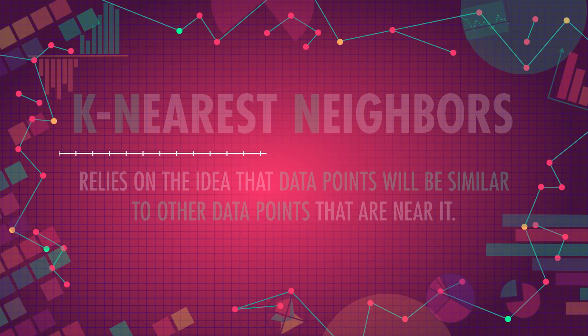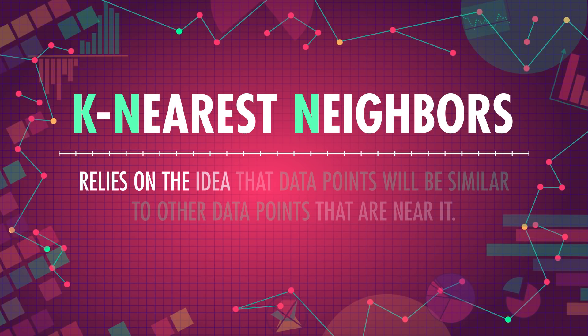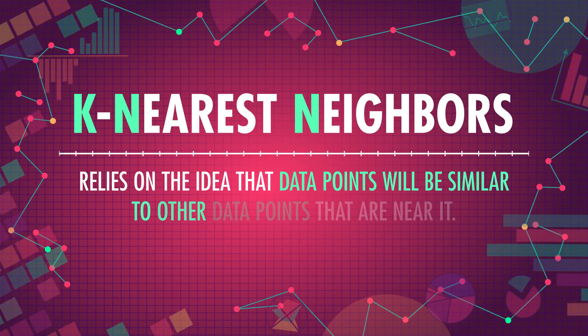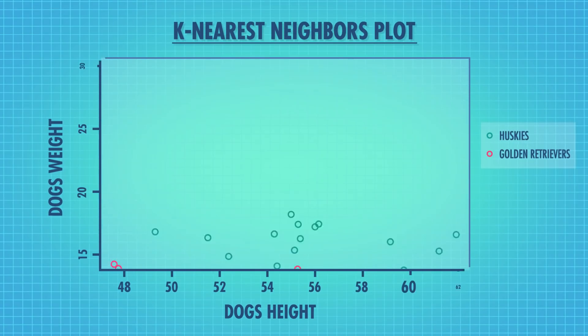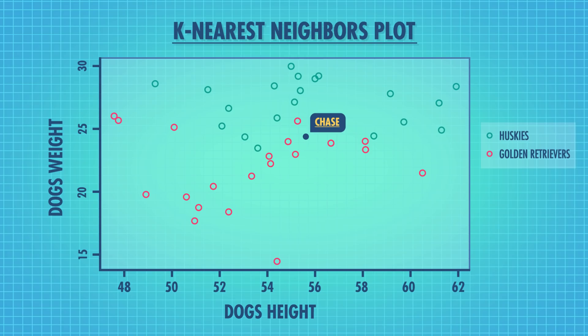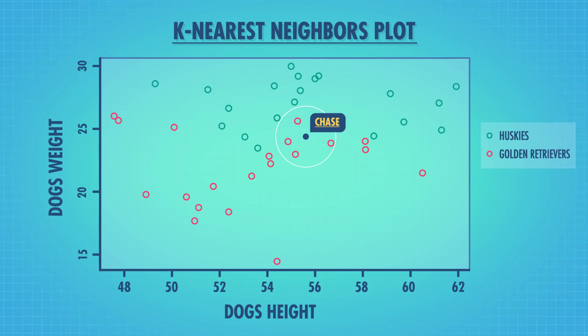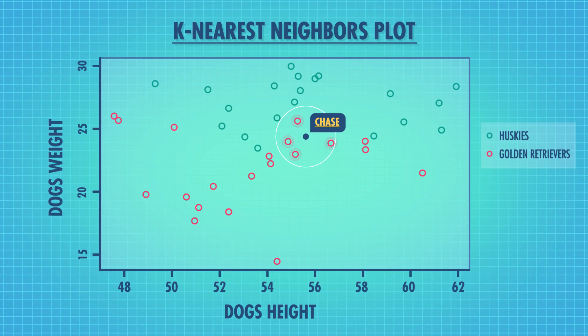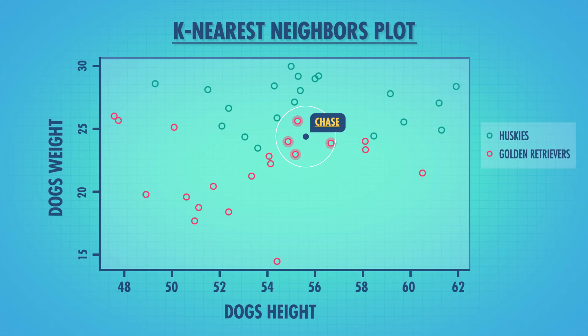The last machine learning model we'll talk about is K-nearest neighbors, or KNN. KNN relies on the idea that data points will be similar to other data points that are near them. For example, let's plot the height and weight of a group of Golden Retrievers and a group of Huskies. If someone tells us a height and weight for a dog named Chase whose breed we don't know, we could plot it on our graph. The four closest points to Chase are Golden Retrievers, so we'd guess he's a Golden Retriever. Whichever category has more data points near our new data point is the category we pick.